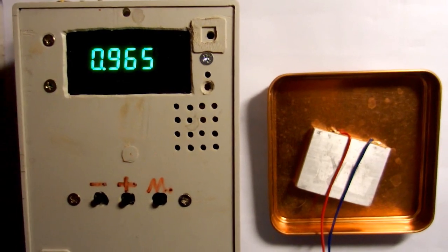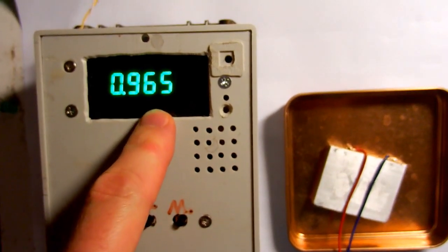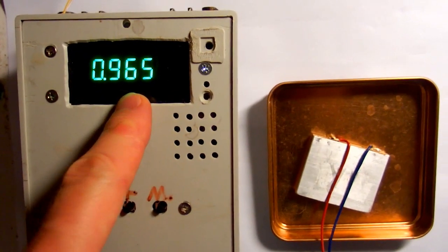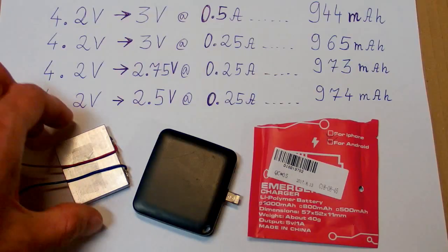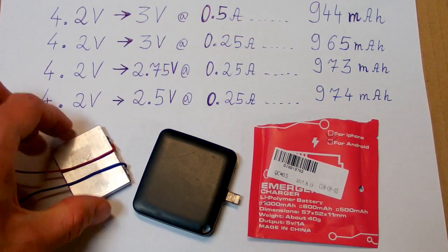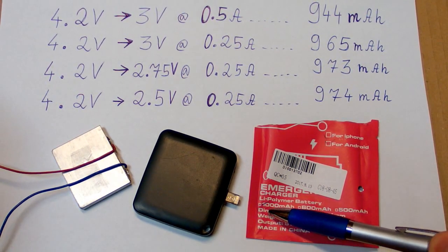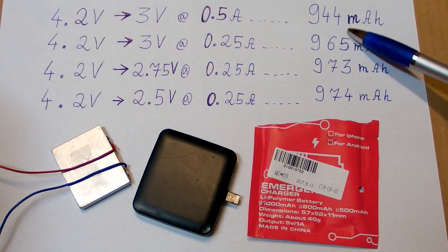So the discharging has been finished and as you can see at half the discharging current the capacity reading is higher but just a little bit. So the conclusion is that the battery really is rechargeable and its capacity is very close to the 1000 mAh it says here. Those are the results of the measurements.